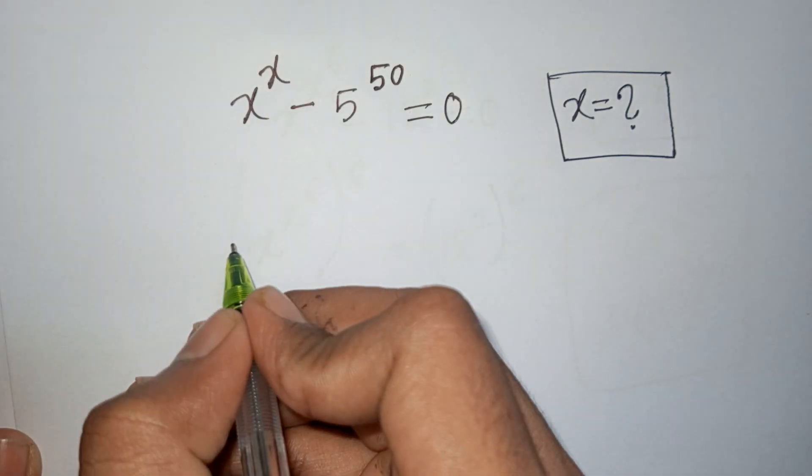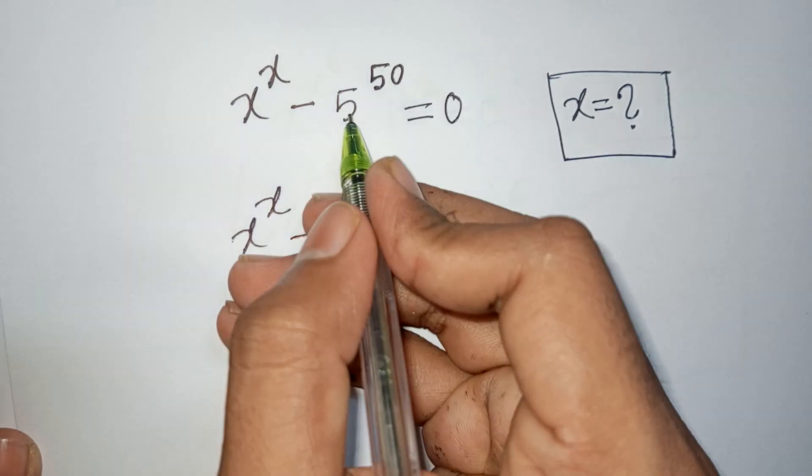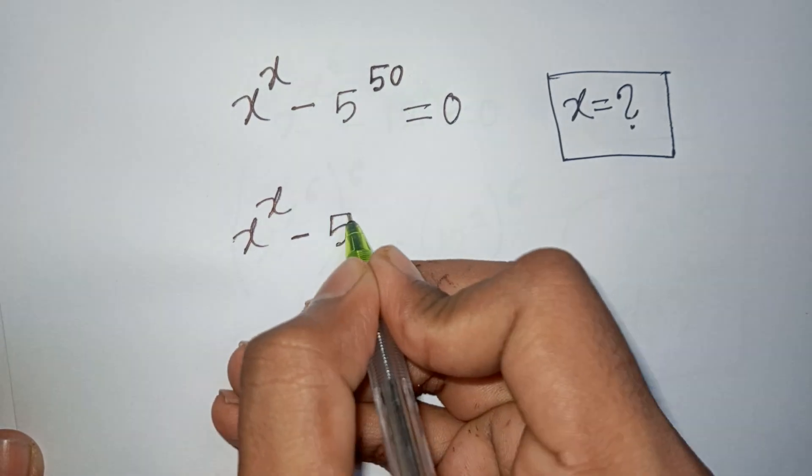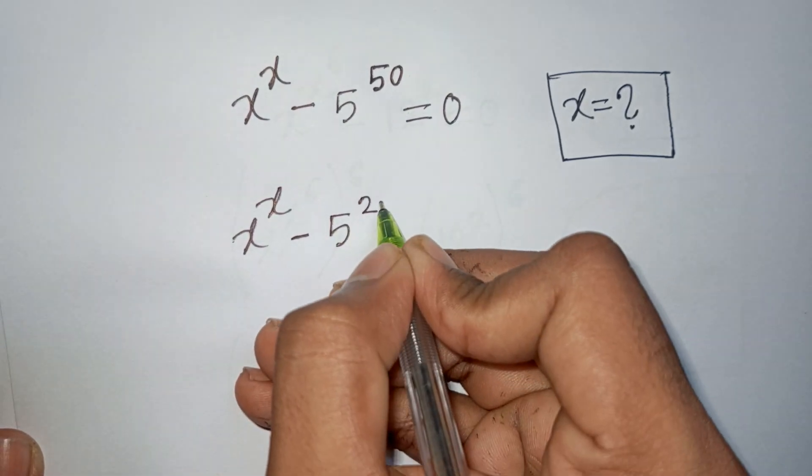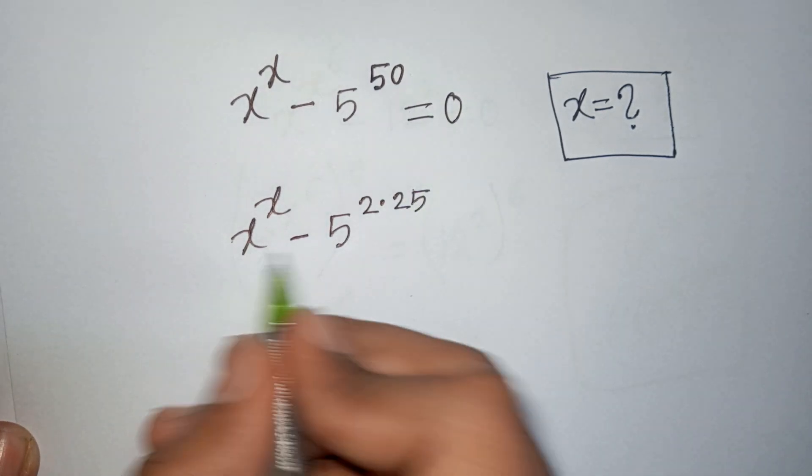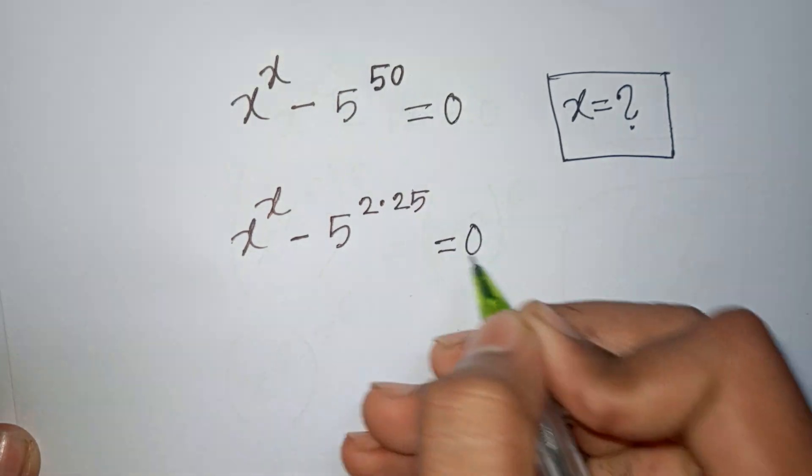So we have x^x - 5^50, which can be written as x^x - 5^(2×25) = 0.